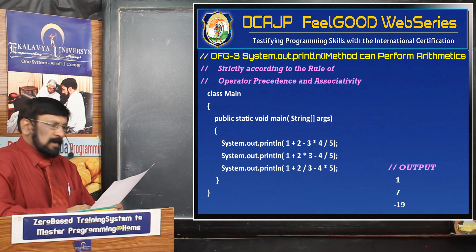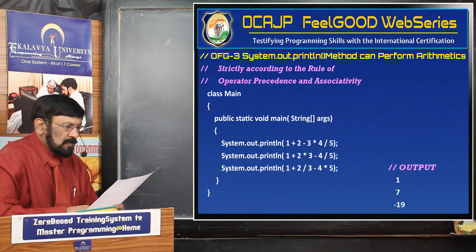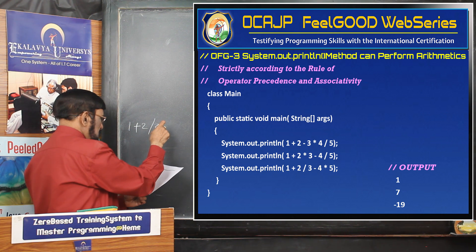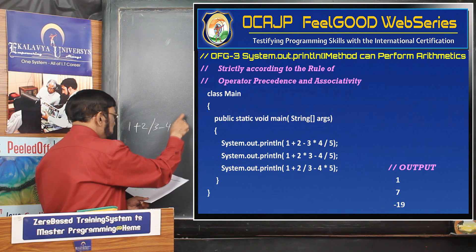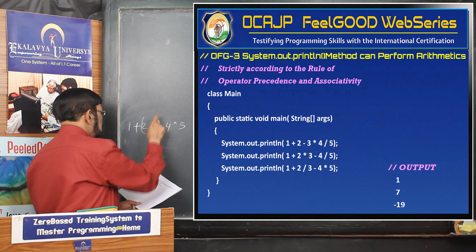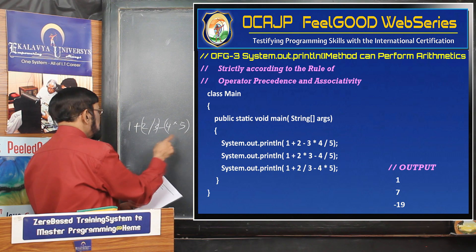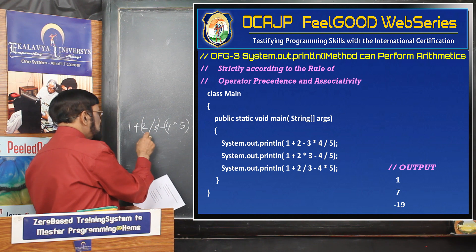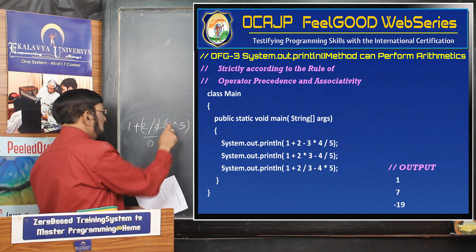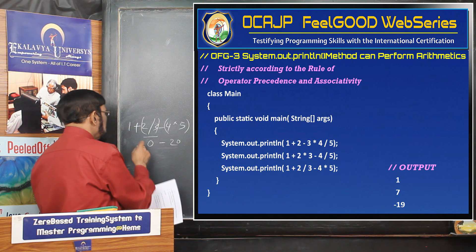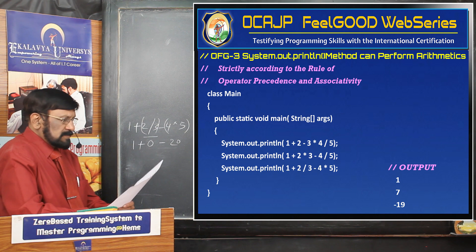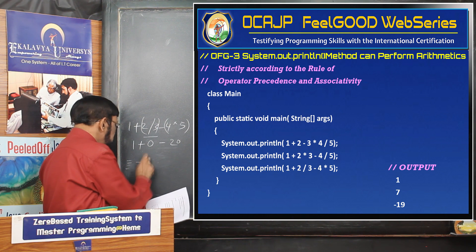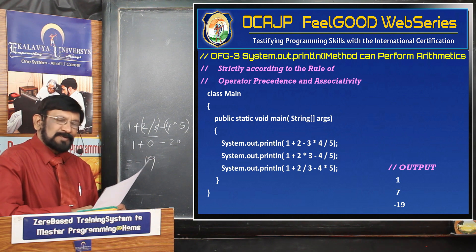Third SOP statement: 1 plus 2 by 3 minus 4 into 5. Division and multiplication are executed first: 2 by 3 integer division gives 0, and 4 into 5 gives 20. Then 1 plus 0 minus 20 equals minus 19. So minus 19 is the result.